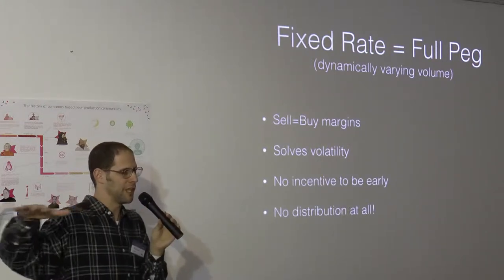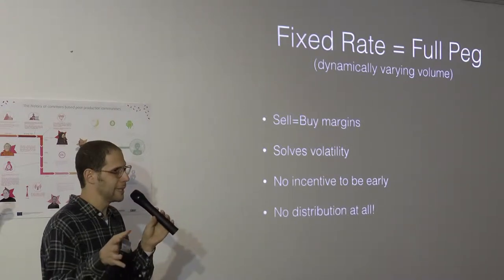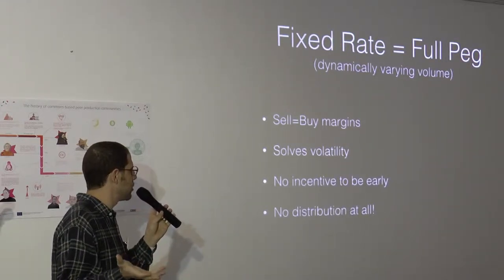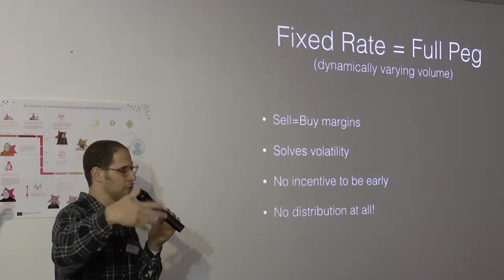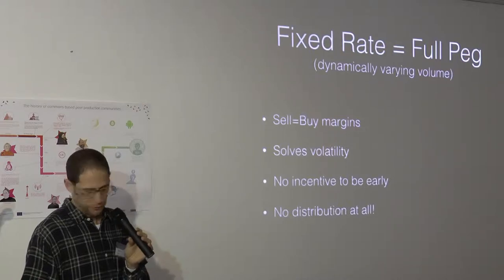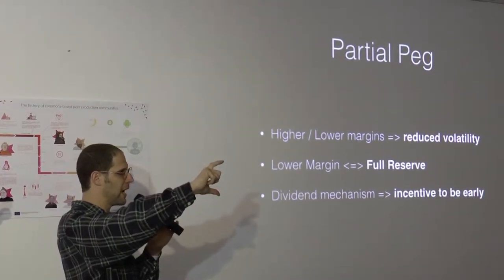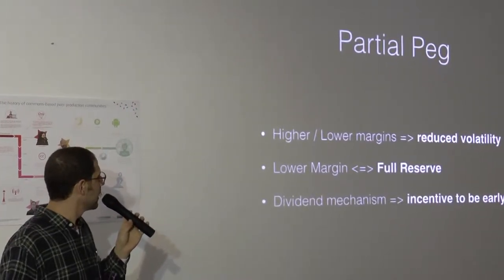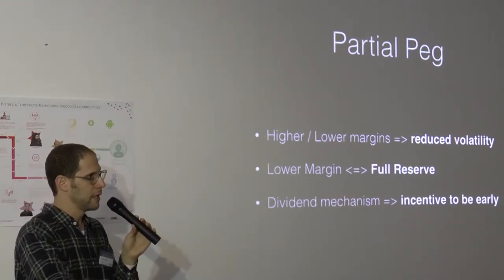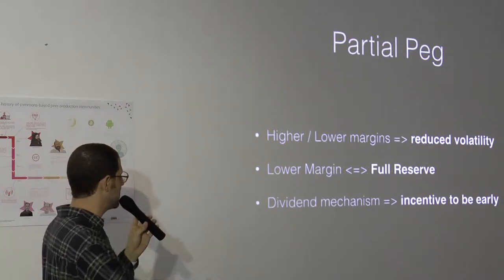Now we can cure that by having fixed rate or full pay mechanism. You fix the rate of tokens to some external value. You are allowing people to buy and sell the tokens for the same rate. That's a full pay mechanism. You are completely eliminating volatility. However, now there is no incentive to be early. And also you cannot distribute any more tokens for contributors because you won't be able to back them with your stock anymore. For that reason we have made a partial pay mechanism. Where you have higher or lower margin which are different. You are selling for higher margin, buying them back for lower margin. That's reducing volatility. The lower margin is fully defined by having a full reserve. If I distribute tokens to contributors, it means I'm lowering the lower margin and basically sharing the value of that system with more contributors.